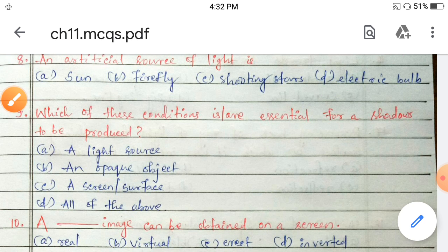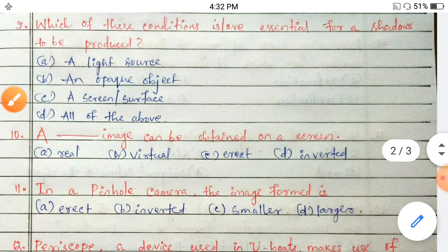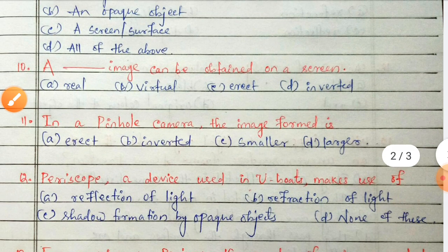Question number 10: a dash image can be obtained on a screen — real, virtual, erect, or inverted? The image that is formed on a screen is a real image.